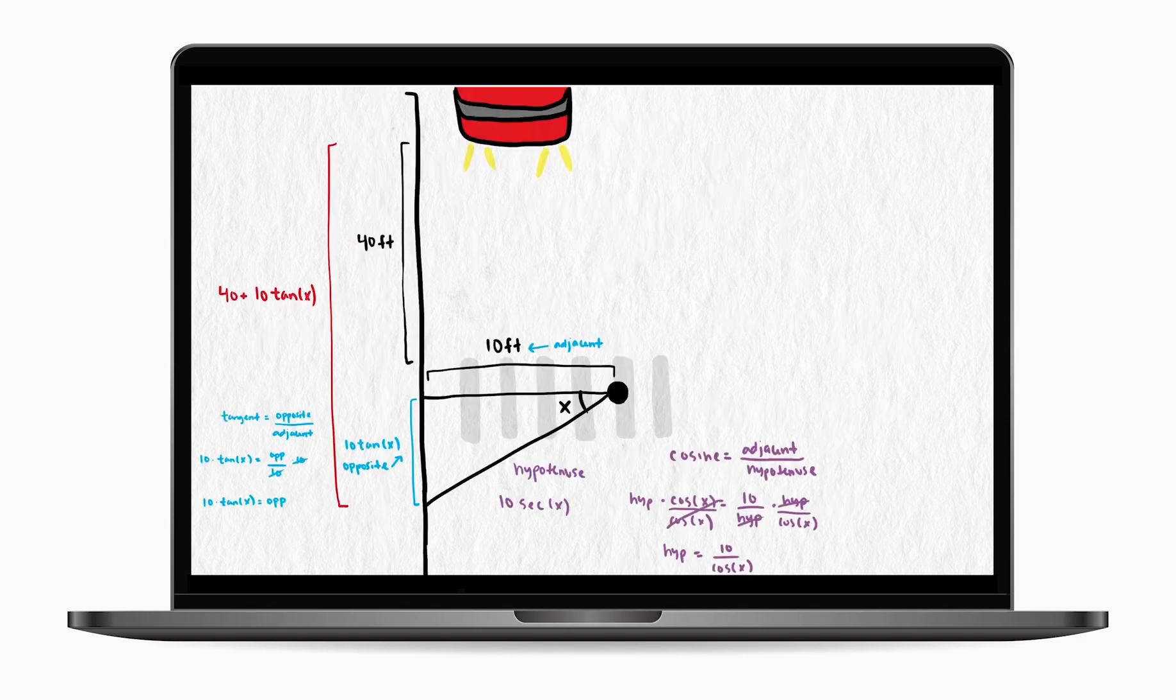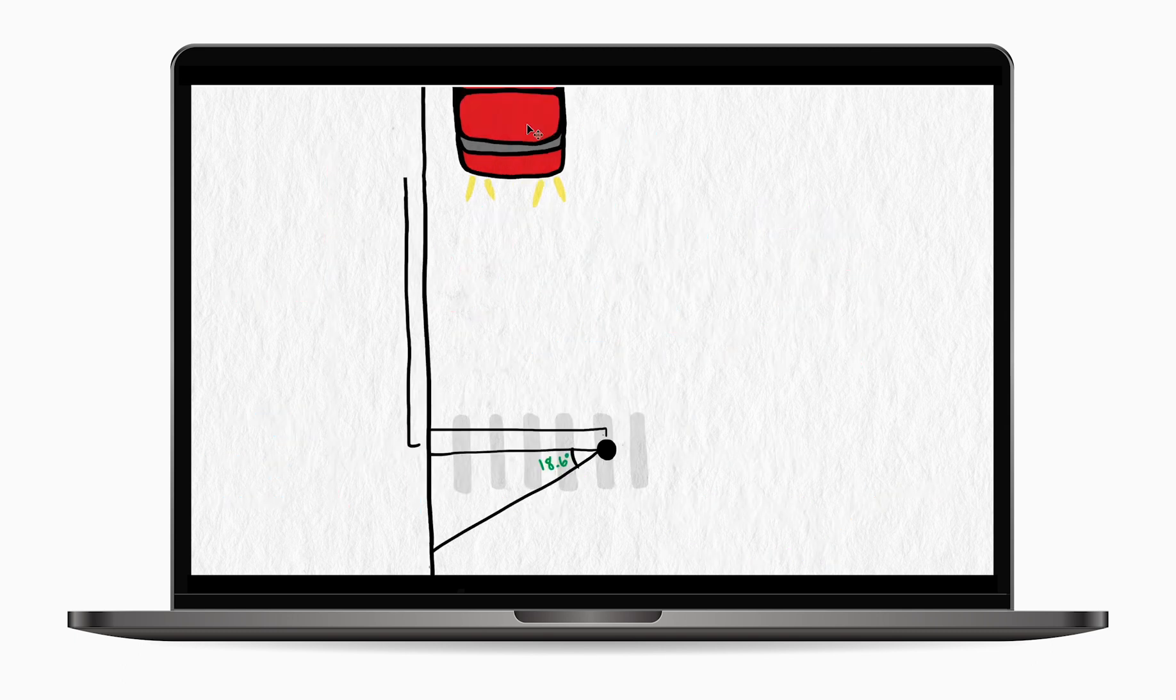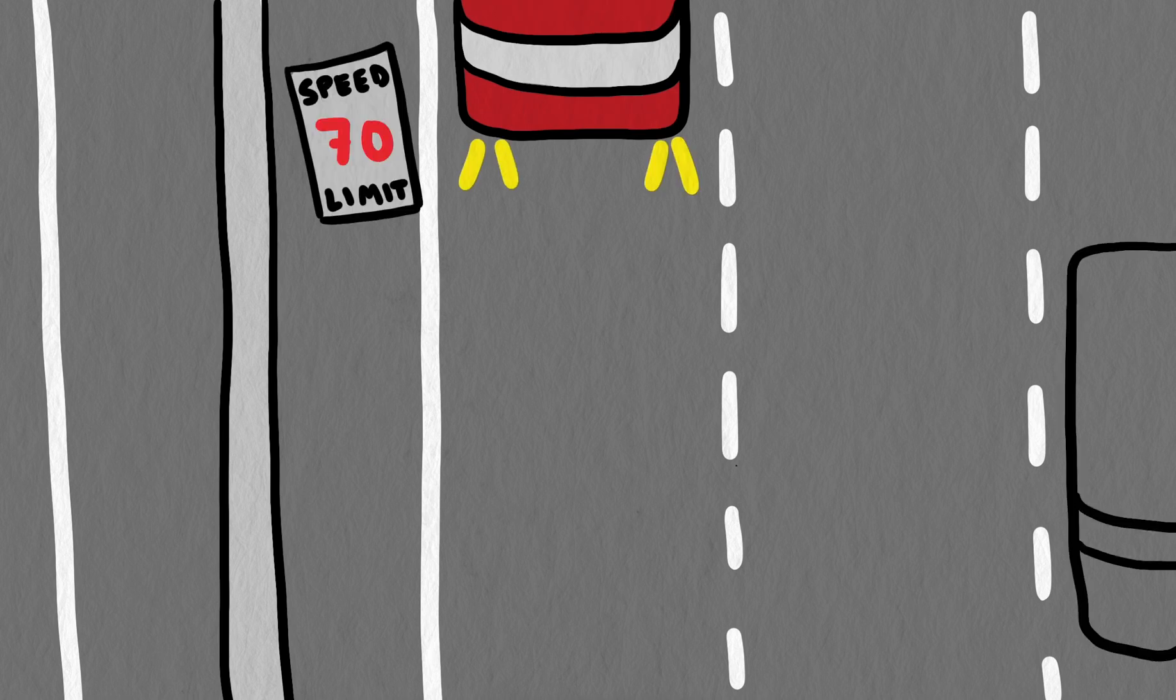Welcome back to Math the World. In parts 1 and 2 of this video series, we analyzed the optimal angle to take to the curb in order to have the best chance of evading an oncoming vehicle. We found that the distances in this situation don't affect the optimal angle, but what about the speed? What if Sarah's crossing a highway instead and the truck's going 70 miles an hour? Should she still aim for 18.6 degrees?